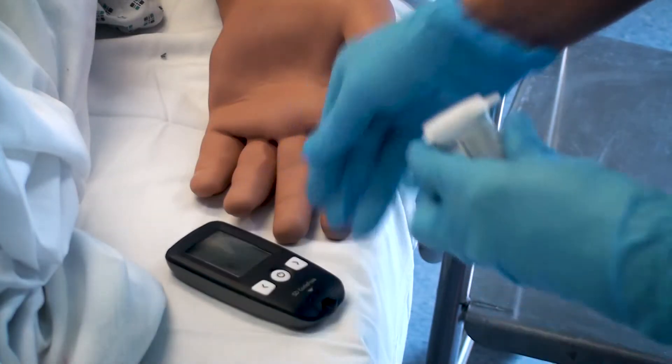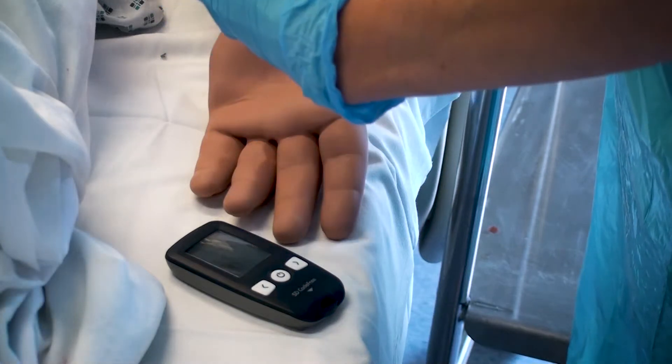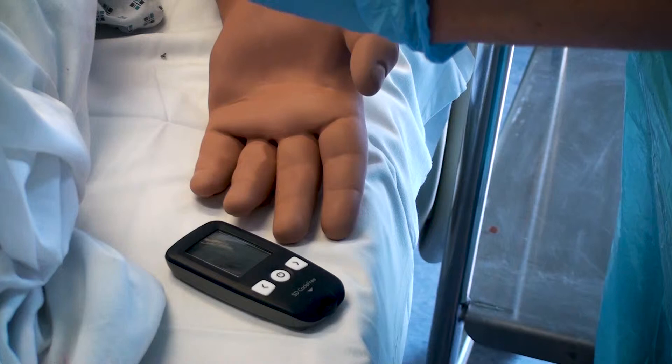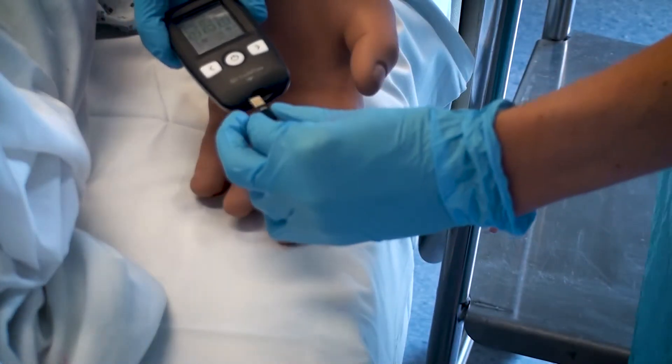Ensure that the patient's hand is in a comfortable position. Prior to obtaining the sample, the digit must be cleaned with water and dried with clean gauze. This is to prevent contamination of the sample by sugary substances from food or drinks. Do not use alcohol wipes to clean the skin.